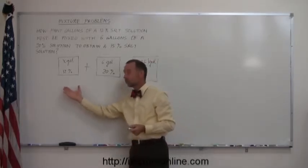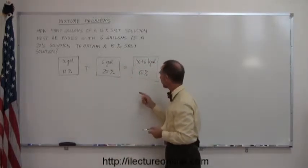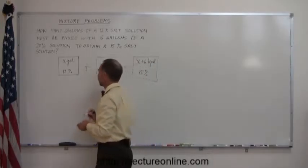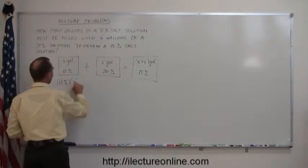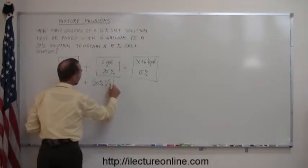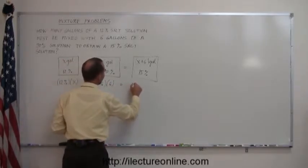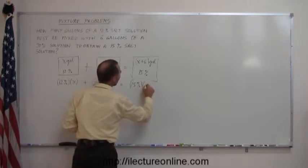Logic says that if you add up the salt in this solution plus the salt in this solution, that should equal the salt in this solution. So, 12% times X plus 20% times 6 equals 15% times (X plus 6).